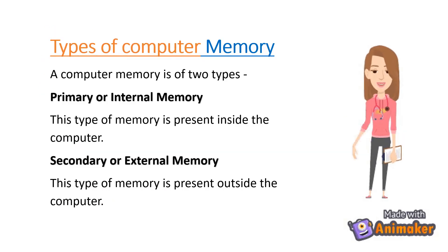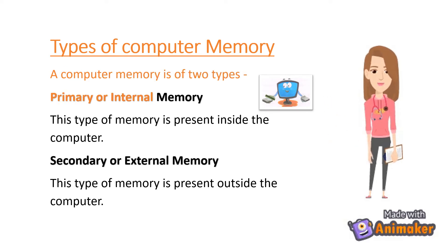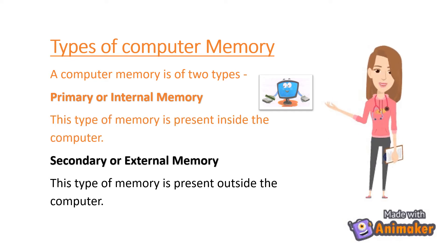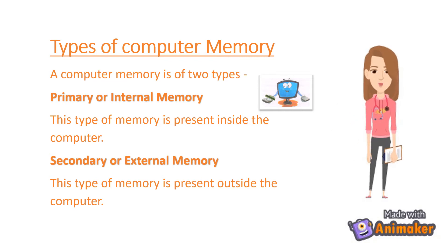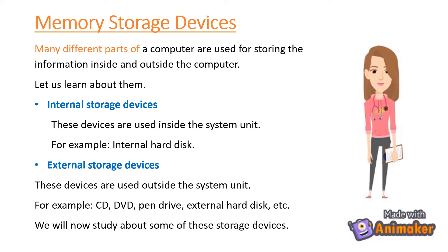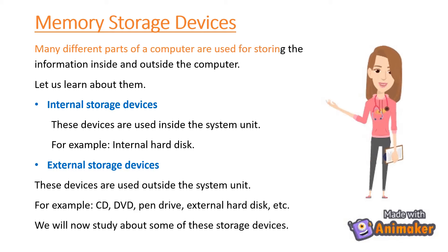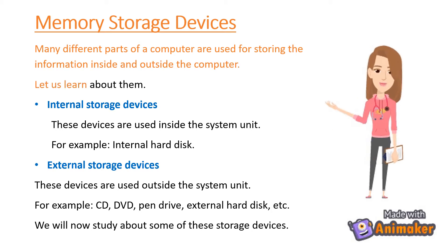Types of Computer Memory: A computer memory is of two types — Primary or Internal Memory, which is present inside the computer, and Secondary or External Memory, which is present outside the computer. Memory storage devices are used for storing information inside and outside the computer. Let us learn about them.